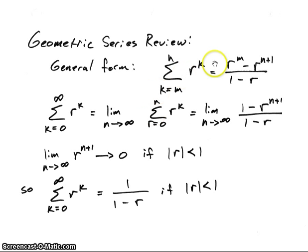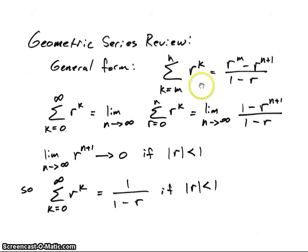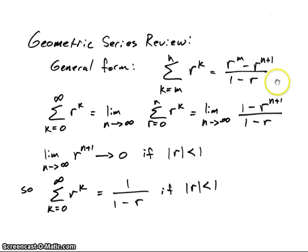Let's look at a geometric series, because we'll probably be doing a lot of adding of those probabilities. The general form is a finite series where our index starts at M and goes to N. The series deals with R raised to some power going from M to N. If we sum up this finite series, we end up with R to the M minus R to the N plus one, all over one minus R.